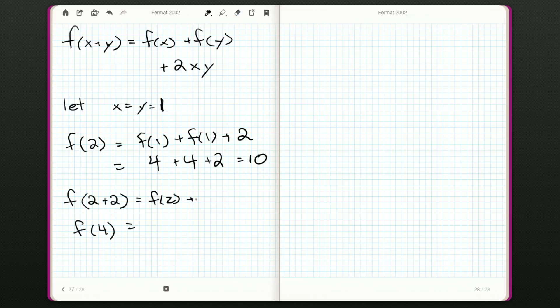f of 2 plus f of 2 plus 2 times 2 times 2, which is 8. So that's 10 plus 10 plus 8, and that's going to be 28. And now we can get f of 8.